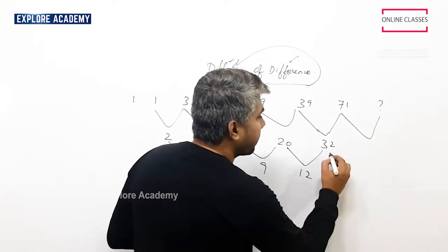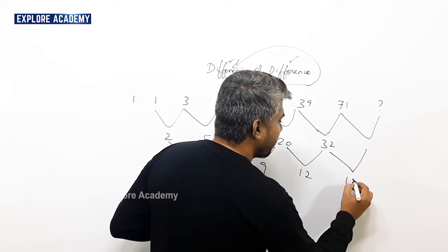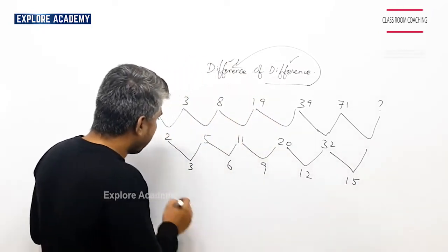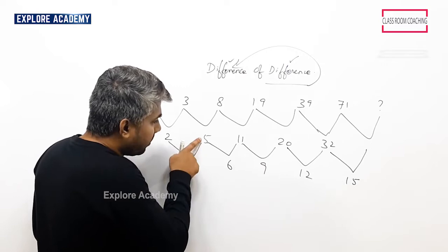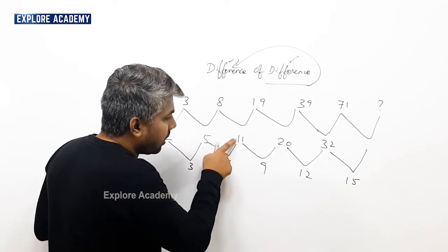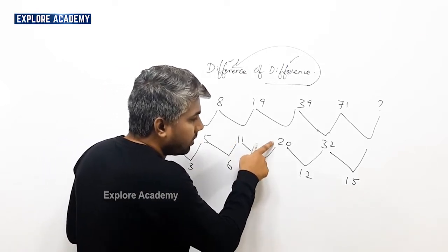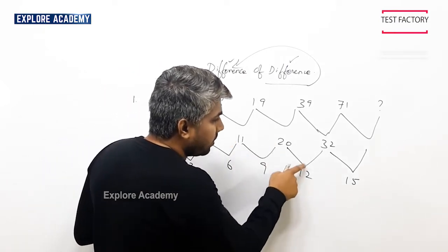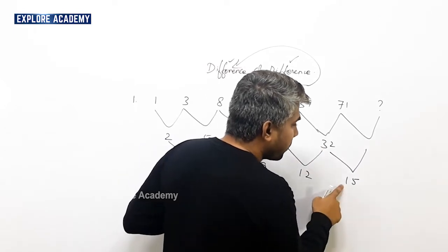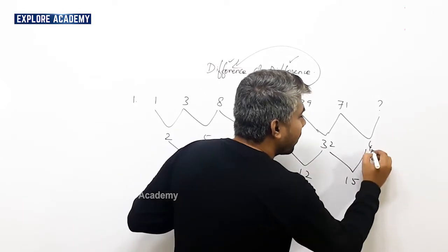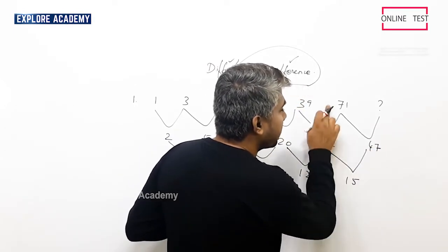Confirm the next difference: 15. You can check: 2 plus 3 is 5, 5 plus 6 is 11, 11 plus 9 is 20, 20 plus 12 is 32, 32 plus 15 is 47.